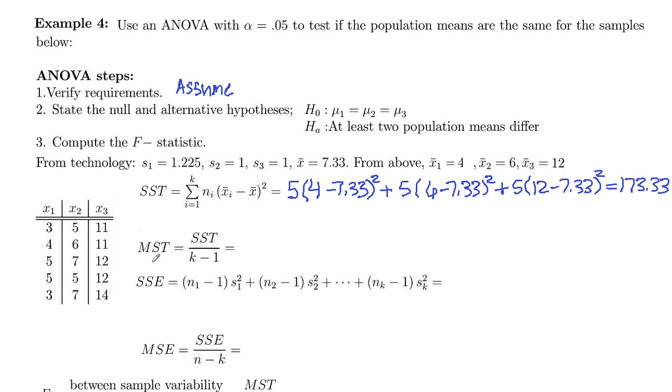And then the mean square of treatments is SST divided by K minus 1. So again, K equals 3, because there are three populations, and three population means that we are comparing. So this is going to be the 173.33, and we're dividing by 3 minus 1, or 2. So that will give us 86.67.